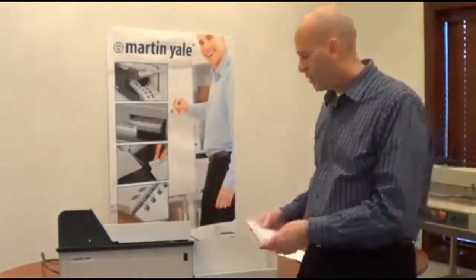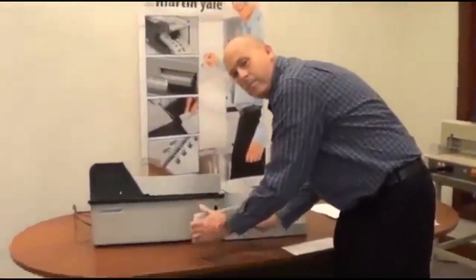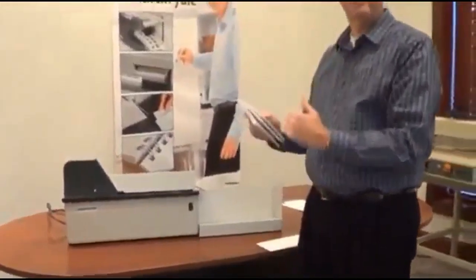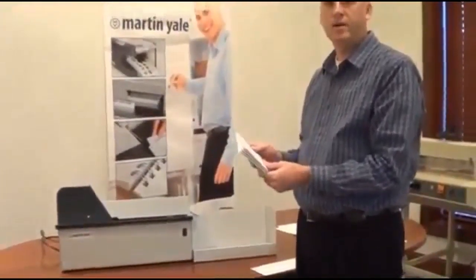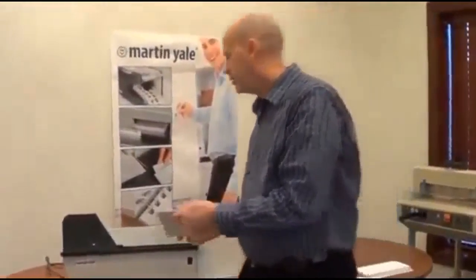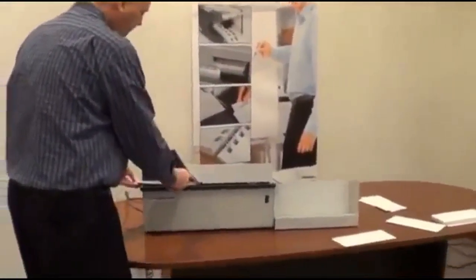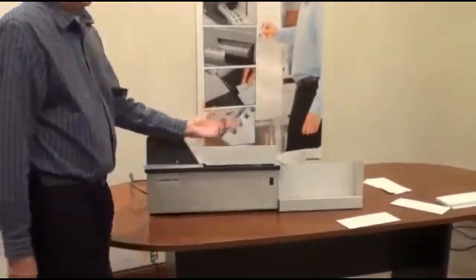The standard operation for any letter opener is you tap down your mail to get all the contents inside down to the bottom. Then what you do is you come over here and you lay the envelopes on your feed system and then you power the machine up.